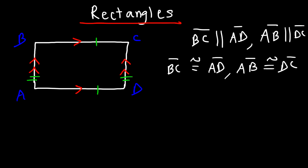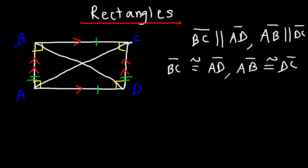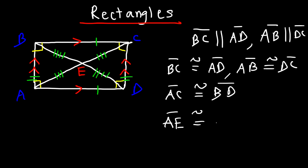All angles in a rectangle are right angles — angle A, angle B, angle C, and angle D all equal 90 degrees. The diagonals are congruent to each other, so diagonal AC is congruent to diagonal BD. The diagonals also bisect each other, meaning AE is congruent to EC and BE is congruent to ED, making E the midpoint of both diagonals.